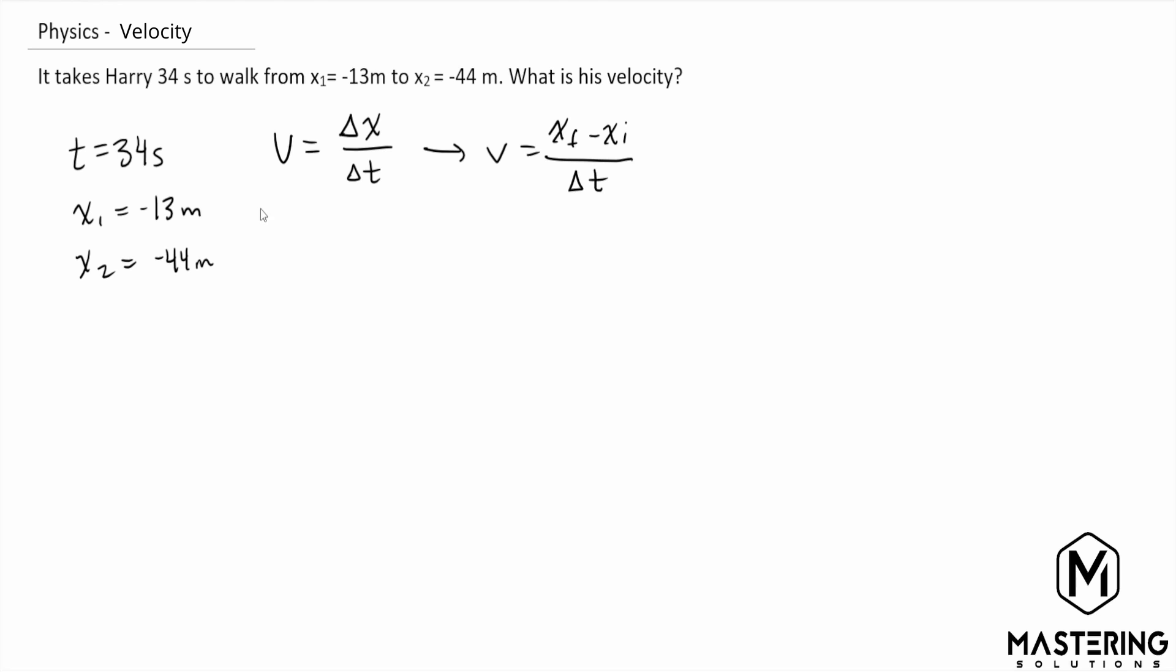Now for this question, we know that the final time is 34 seconds and the t initial is zero, but since we're starting out with zero we don't need to worry about that, and delta t is 34 seconds.